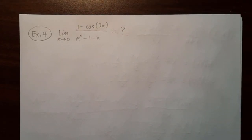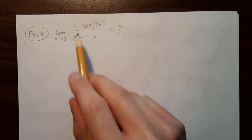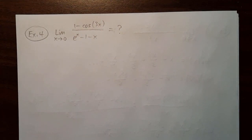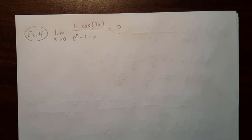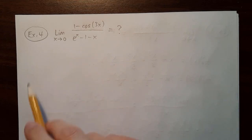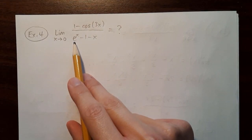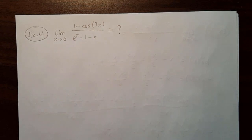Here's a similar limit problem. We're taking the limit as x goes to zero of 1 minus cosine of 3x, divided by e^x minus 1 minus x. Just like before, we'll evaluate this using Taylor series. I need to write out everything as a series — it looks like there are two main pieces: cosine of 3x and e^x.